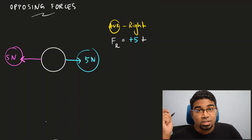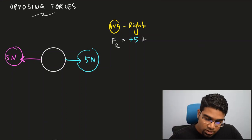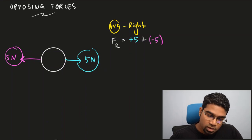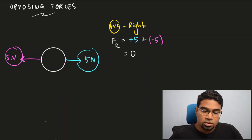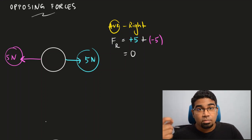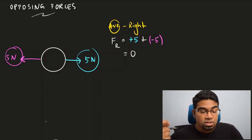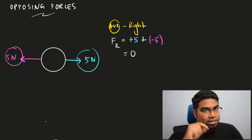So we write positive 5, plus the other 5 newtons in the opposite direction. Since it is in the opposite direction we assign it a negative value: negative 5. This gives us 0. So the resultant force, or the sum of forces acting on this object, is 0. This means that this object is not accelerating. Remember, this resultant force results in acceleration.